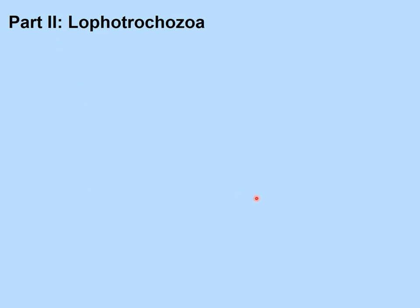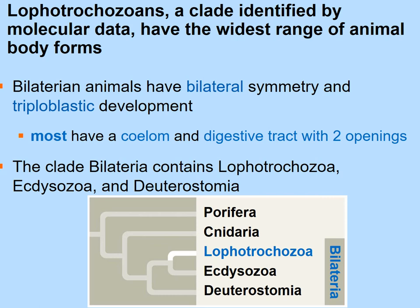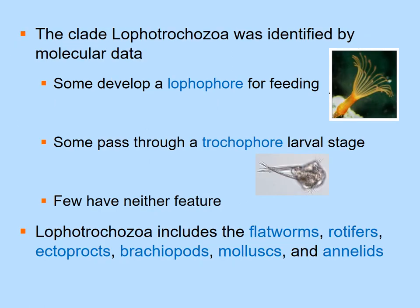Lophotrochozoa is one of the two major groups of protostomes — the other being Ecdysozoa. The Lophotrochozoa clade was identified by molecular data and encompasses the widest range of animal body forms. These bilaterians undergo triploblastic development — three germ layers. Most have a coelom and a digestive tract with two openings: a separate mouth and anus.